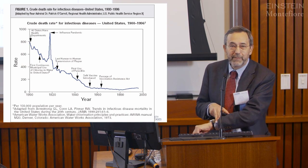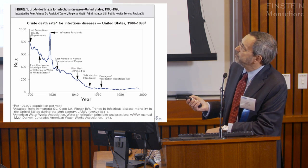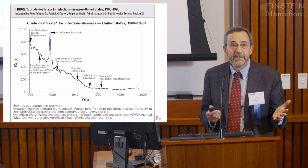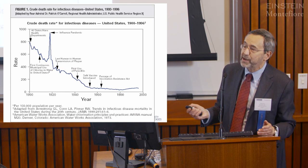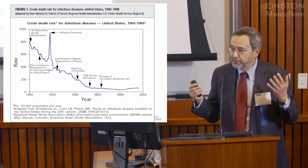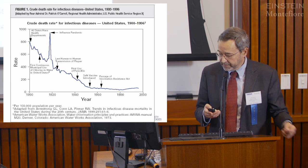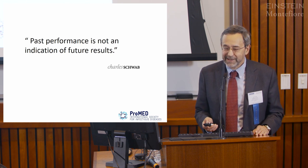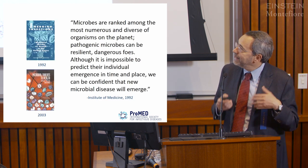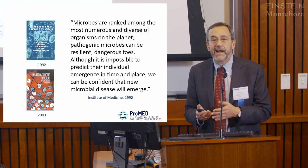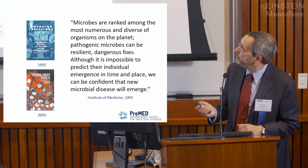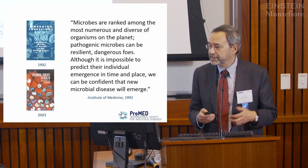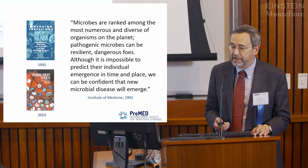One reason HIV wasn't recognized sooner was attitudinal. This has been attributed to William Stewart as Surgeon General in 1969 — though it can't be fact-checked — but it reflected a prevalent attitude that infectious diseases were a solved problem. Bob Petersdorf, chief of medicine at Brigham Women's Hospital, also thought infectious diseases were vanishing. There had been a pretty monotonic decline in infectious diseases in developed countries, and as vaccines and antibiotics came along, the thinking was we could turn our attention to heart disease and cancer.